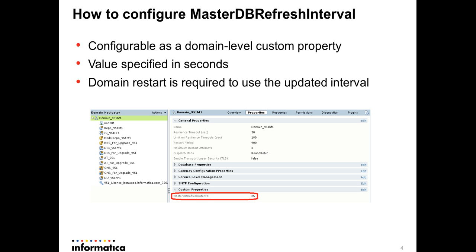To configure master db refresh interval: this is a domain-level custom property which can be set from the admin console. The value is specified in seconds, and once you set this property you need to restart the complete domain so that all nodes start picking up the newly updated values.